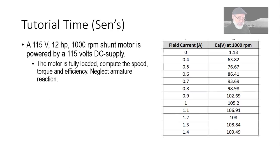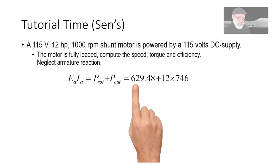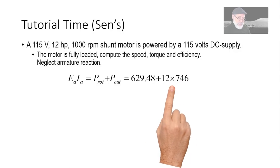Now the motor is fully loaded. And we're asked to compute what is the speed, what is the torque, and the efficiency. And we're blessed with a note: neglect armature reaction. We do not know the value of Ea or Ia, but we know the total power. What is that? 12 multiplied by 746. That is the output power. 746 exactly because that is a convention of the manufacturers of electric motors in North America. One horsepower, exactly 746.